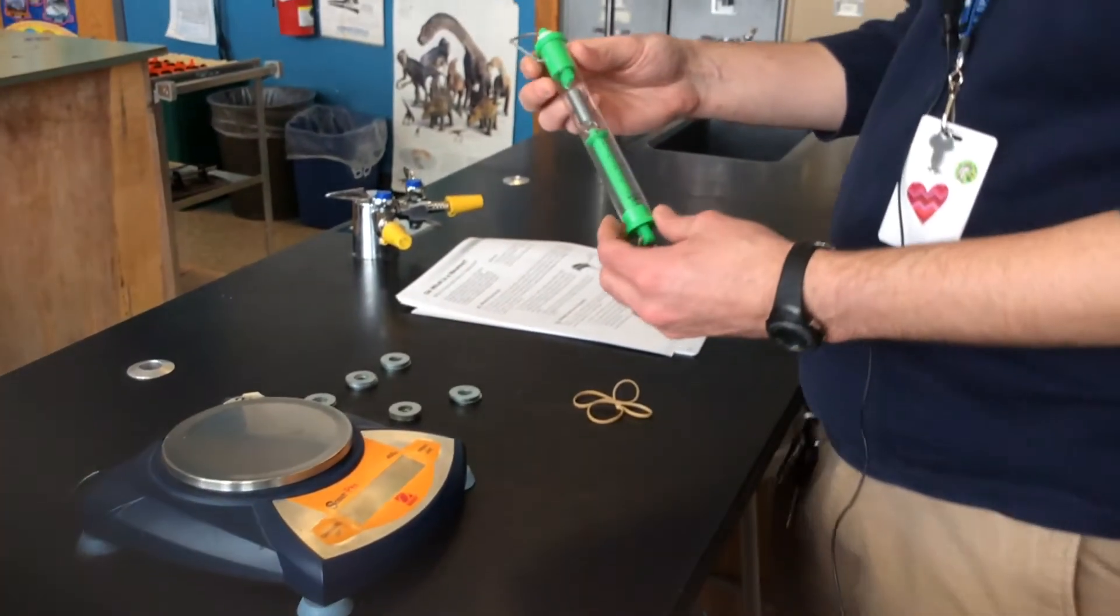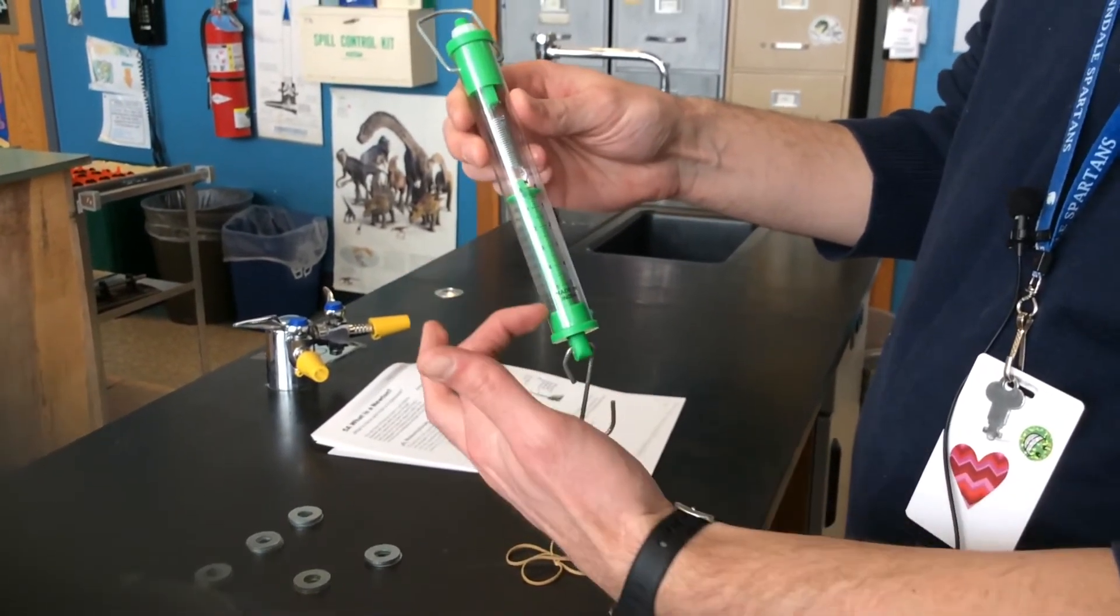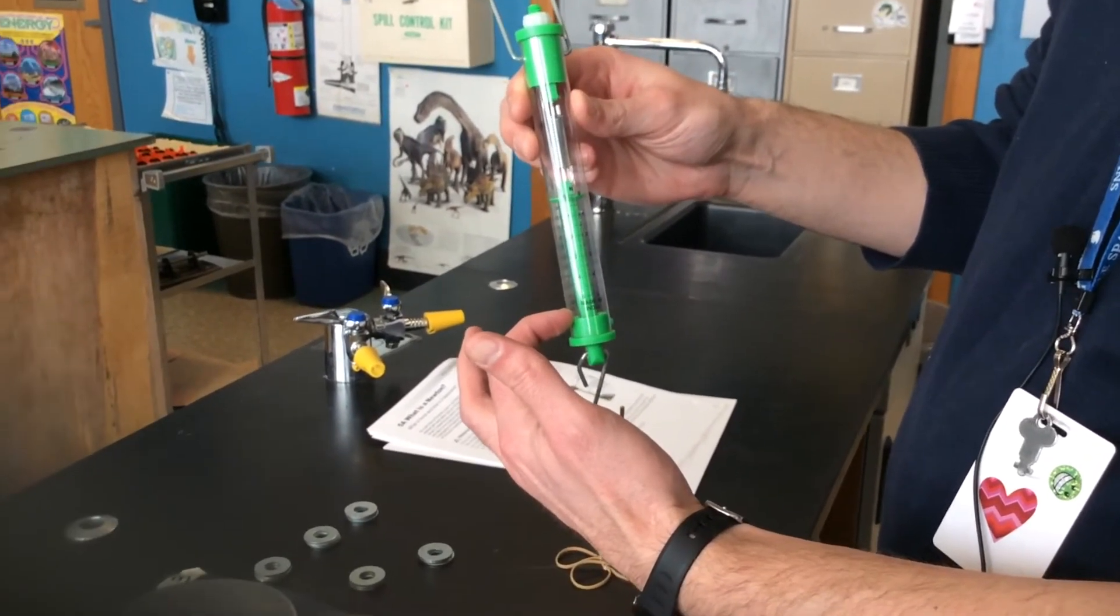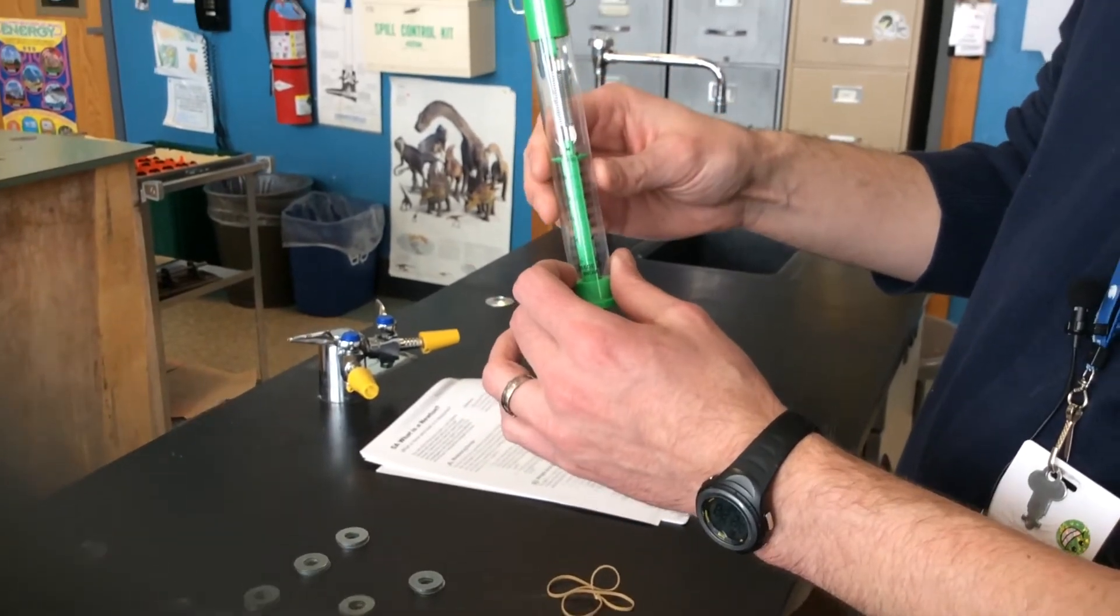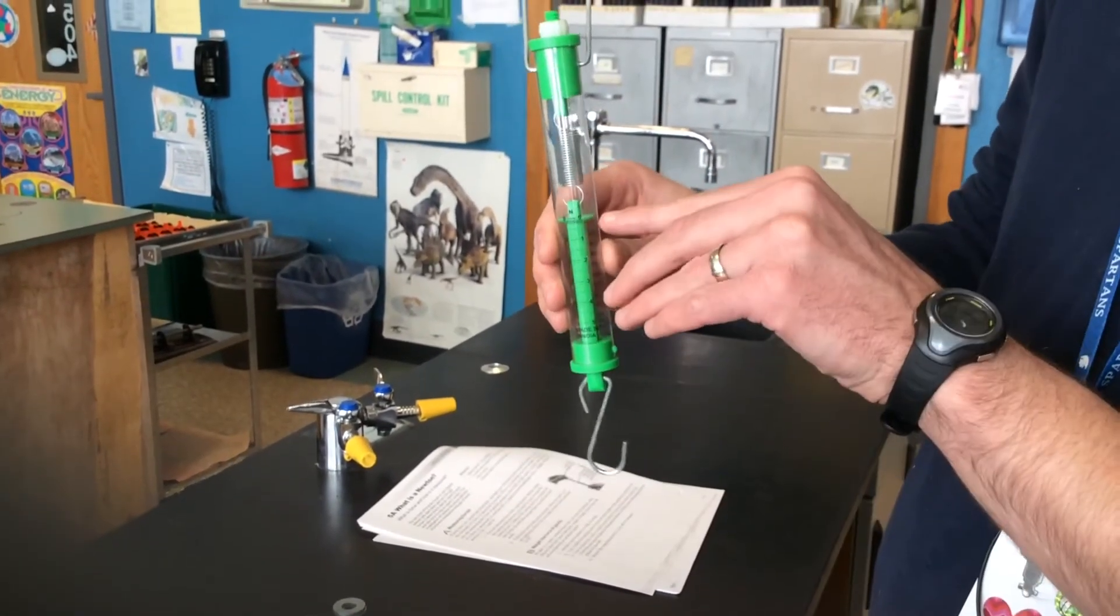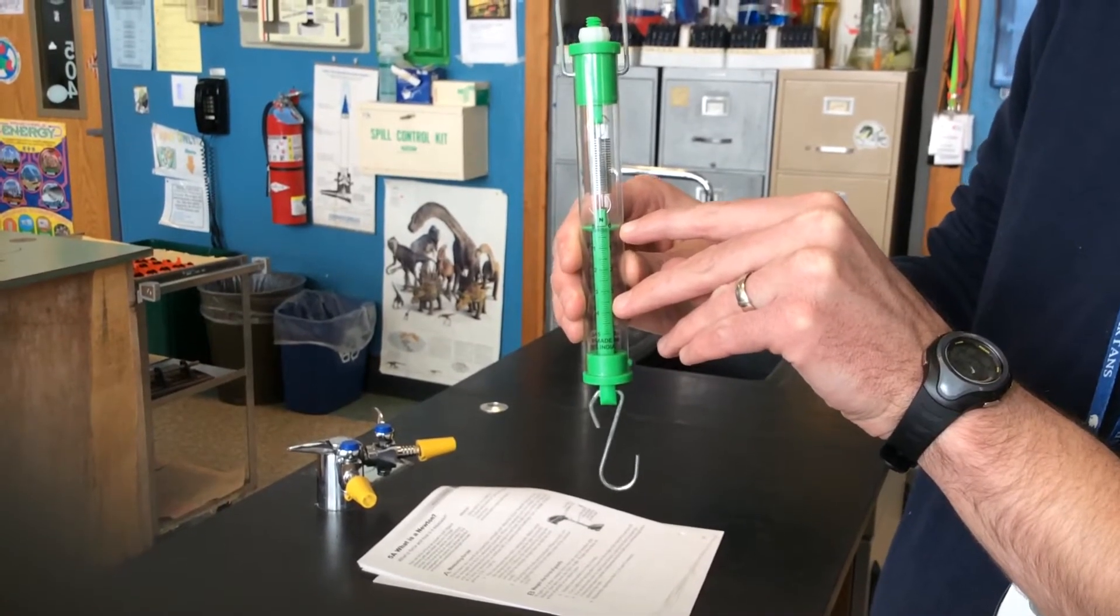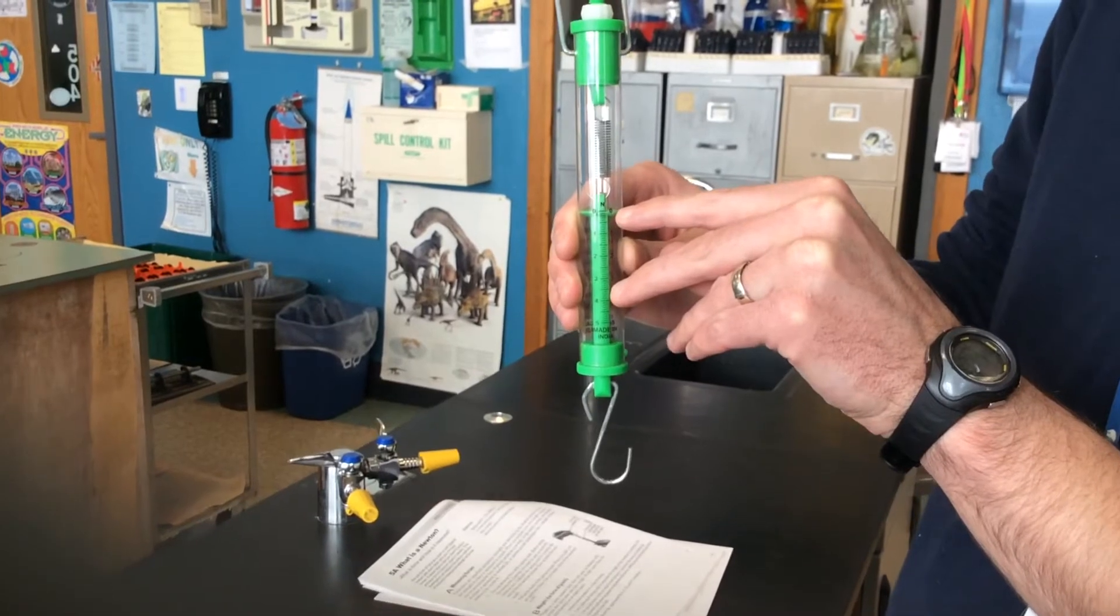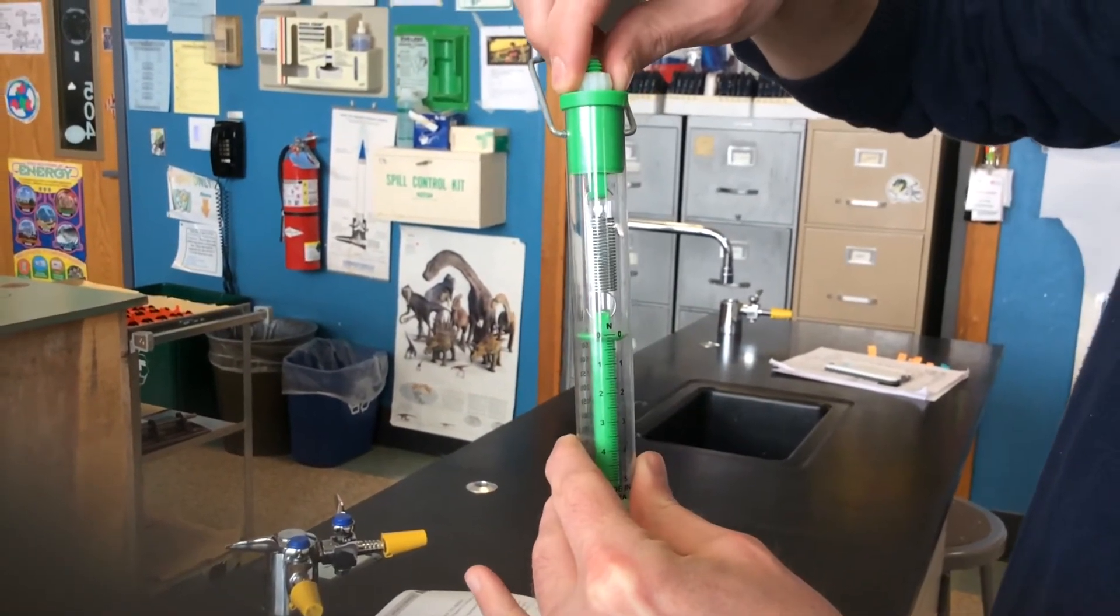The first thing to show here, this is a spring scale. This particular one has a scale of 5 Newtons that it can measure. And the first thing you want to do when using a spring scale is to calibrate it. And what that means is we want it to be set to 0. This little green disk is where it's measuring exactly what is 0 Newtons. And we need it to be set at 0 when nothing is hanging from it. So, that's adjusted with this little knob up top.